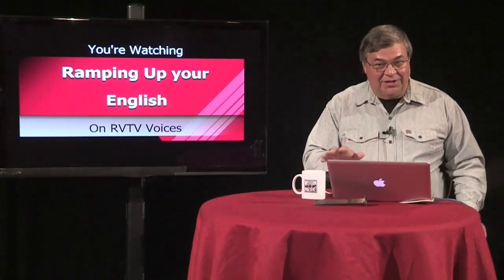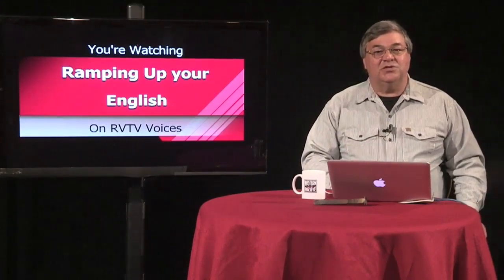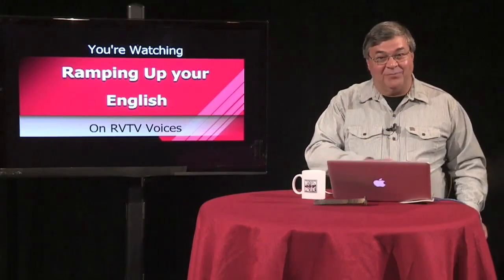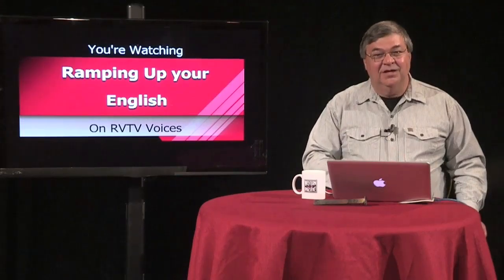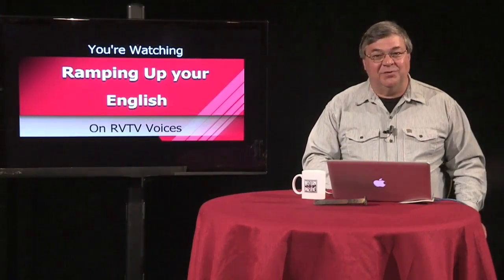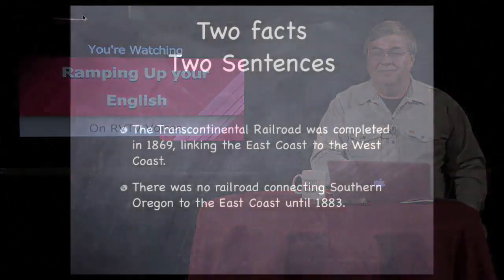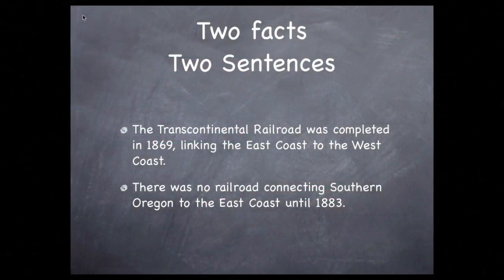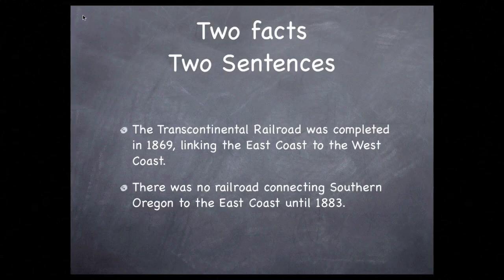That clearly shows that it happened in the past. But if we use the fact in relation to the building of the railroad in Southern Oregon, which happened later but still in the past, the simple past tense will simply not do the job. We're going to show the relationship between these two facts. The Transcontinental Railroad was completed in 1869, linking the East Coast with the West Coast. There was no railroad joining Southern Oregon to the East Coast until 1883. As shown here, there doesn't seem to be much of a connection.